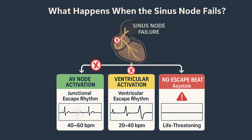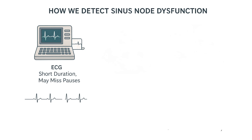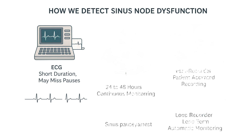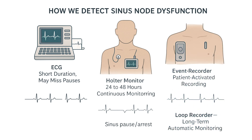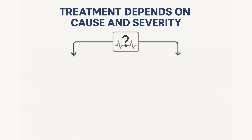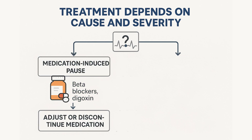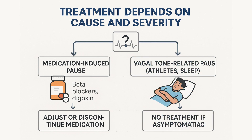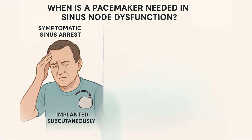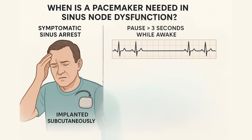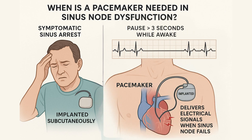In some cases, patients may have brief seizures or fall injuries because of sudden loss of consciousness. Diagnosis often requires long-term monitoring — a standard ECG might miss a pause unless it happens during recording. That is why we use Holter monitors, event recorders, or even implantable loop recorders. Treatment depends on the cause and the severity. If the pause is due to medication, we may reduce the dose or stop the drug. If the pause is related to increased vagal tone and causes no symptoms, no treatment may be needed. But if the patient is symptomatic, or if the sinus arrest lasts longer than three seconds while awake, we consider a pacemaker.